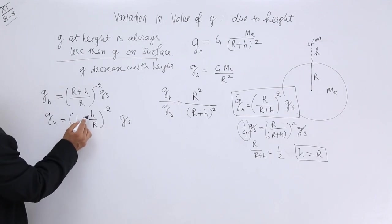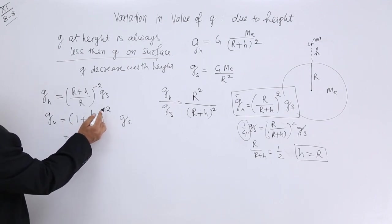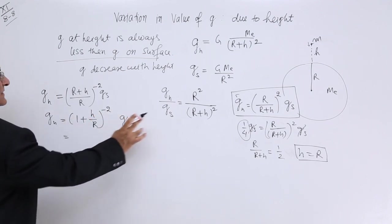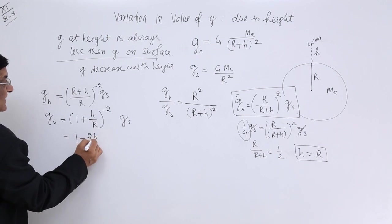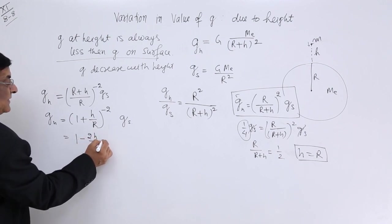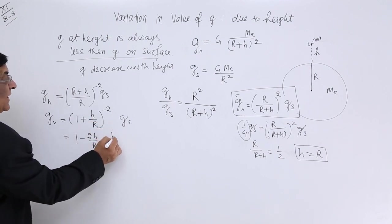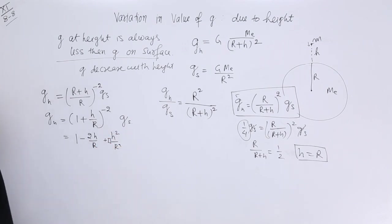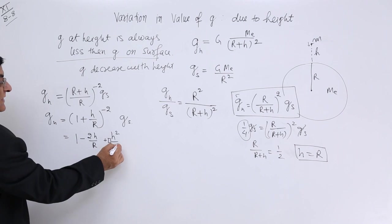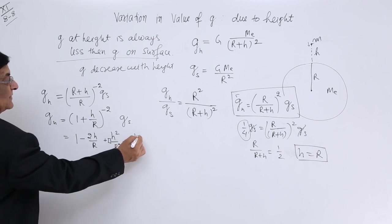So this is equal to 1 plus H upon R to the power minus 2. Now, 1 plus H upon R to the power minus 2, this we can extend using binomial theorem. So first term will be 1. Second term will be minus 2 H upon R. And third term will have square of H and square of R.